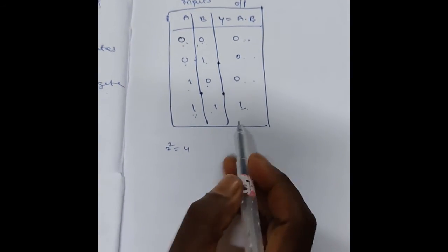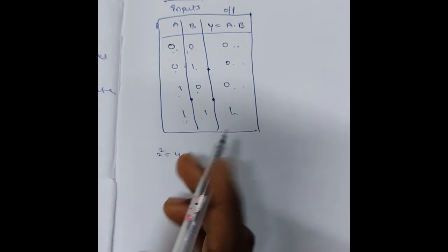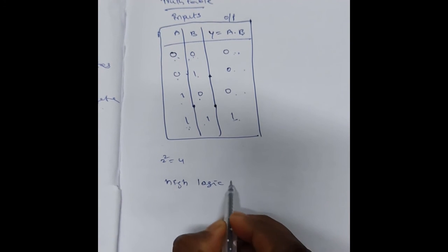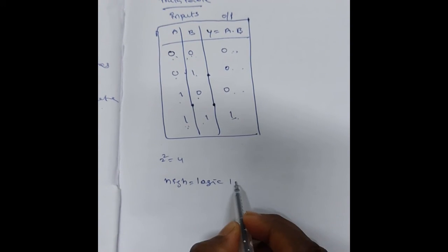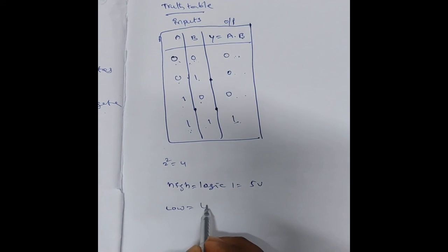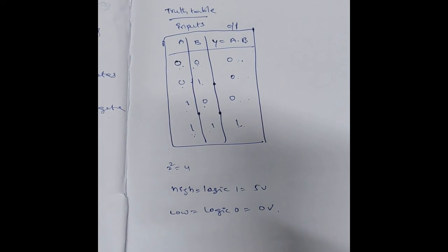For AND gate, when both the inputs are high, then the output is high. High means logic 1, that is equal to 5 volts. Low means logic 0, that is equal to 0 volts.